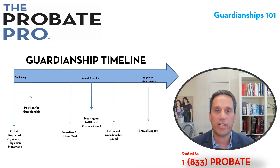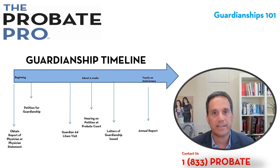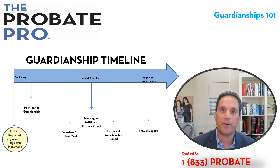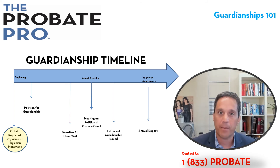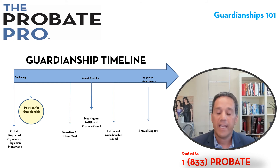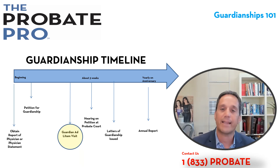Let's walk through the timeline of how the guardianship process works. This is a simplified illustration, but it highlights the key steps. First, you get written evidence from a medical provider indicating the basis and need for the guardianship — most courts will accept the state court approved form or any writing from a medical provider. From there, the petition is filed with the probate court asserting the basis and need, and it's calendared and scheduled for hearing.